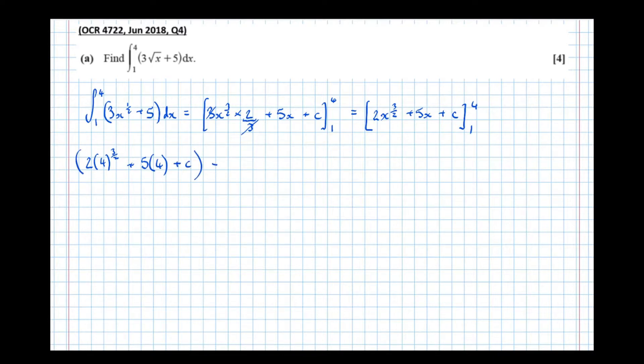Then we're going to take away the same expression, but with 1 subbed in, and that's what those limits mean. 2 lots of 1 to the 3 over 2, plus 5 lots of 1, plus c.